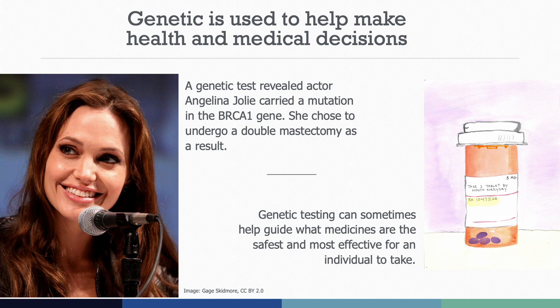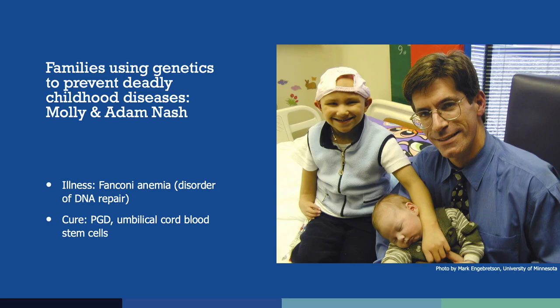Genetics is increasingly used to make medical decisions — for diagnosis, to identify potential health risks, and to choose medications that are safer and more effective for each patient. In 2013, actor Angelina Jolie publicly shared her experience using genetic testing to identify her genetic risk of breast cancer, which ran in her family, and her subsequent choice to have a preemptive double mastectomy. Genetic tests can also be used to predict how the body may metabolize a drug and can affect the dosage or whether the medication is prescribed at all.